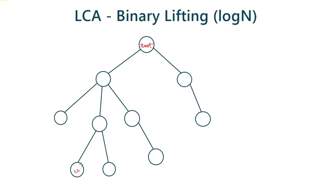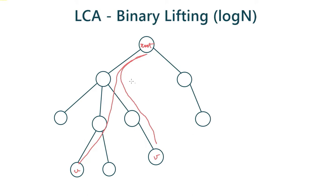Given two nodes U and V, the LCA of U and V will lie in the path from root to U, and will also lie in the path from U to V. If there are multiple nodes common to both of these paths, we take the node which is farthest from the root. So this W node will be the LCA of U and V.